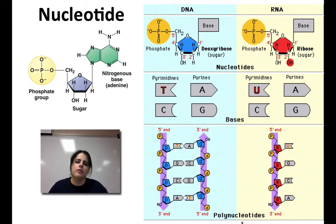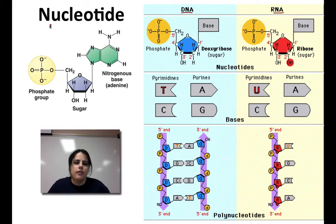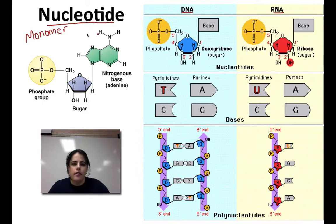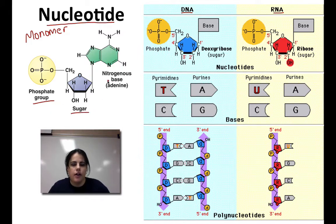When we look at the different nucleic acids, DNA and RNA, they have very similar but slightly different structures. The nucleotide is the monomer — the smallest part of a nucleic acid. It has three parts: a phosphate group, a pentose sugar (a five-carbon sugar), and a nitrogenous base.